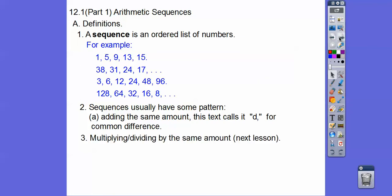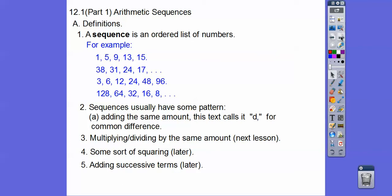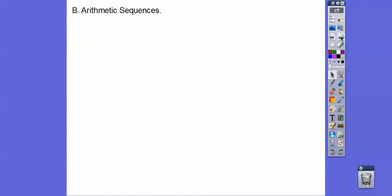Other sequences might be multiplying or dividing by the same amount. Sometimes they square: 1 squared is 1, then 4, then 9 and 16 — because that's 1 squared, 2 squared, 3 squared, 4 squared. So 5 squared would be 25. And then we have sequences called the Fibonacci sequence, where you're adding successive terms — but we won't talk about that in this module.